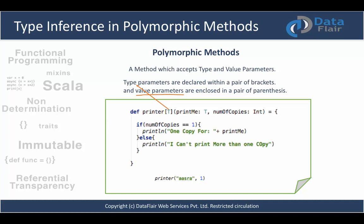To use this polymorphic method, we did not have to pass the type parameter explicitly — we directly passed an object and Scala was able to infer the type. That is powerful. It is a great offering from Scala.